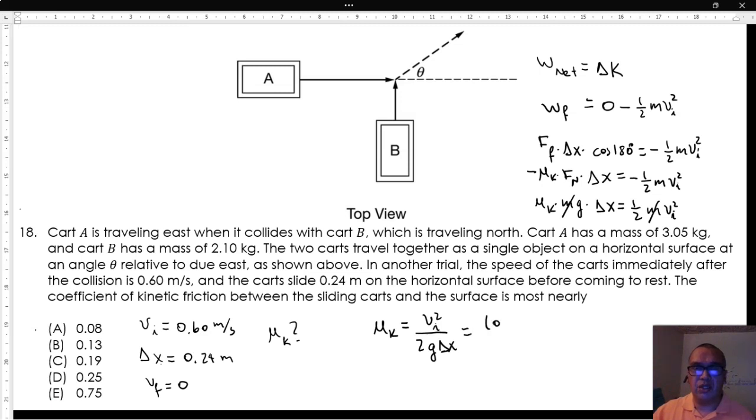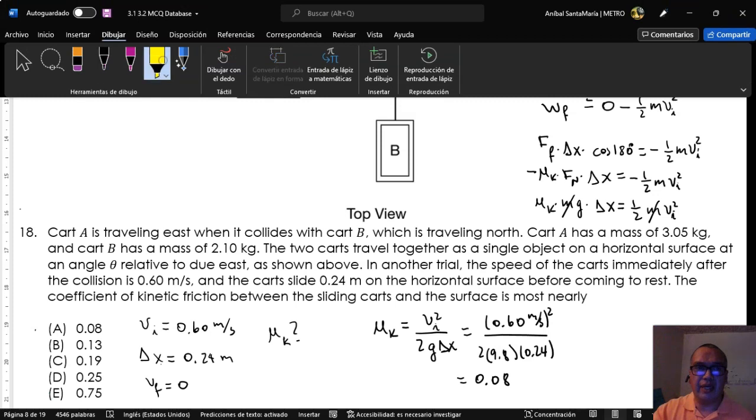That is 0.60 meters per second squared divided by 2 times 9.8 times 0.24 and that is equal to 0.08, which is option A.